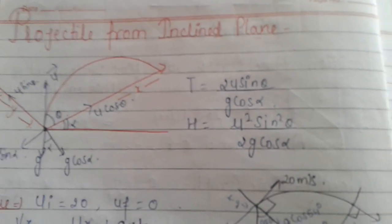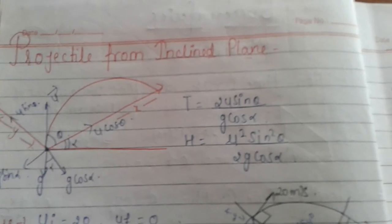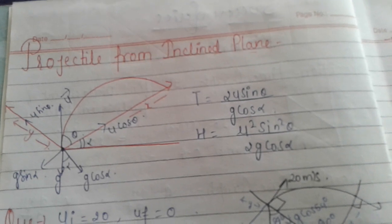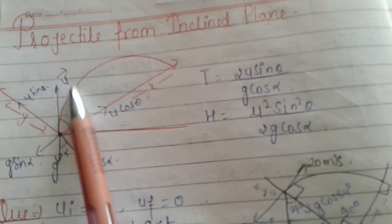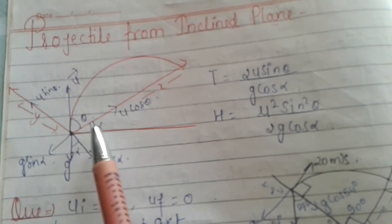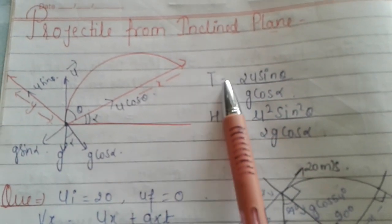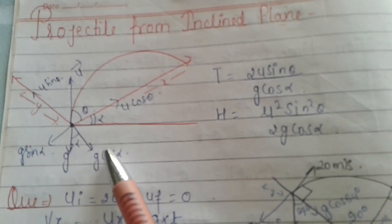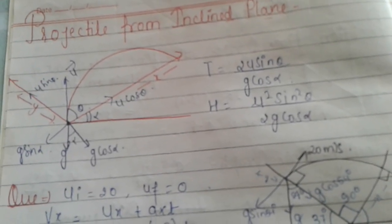The next topic is projectile motion from an inclined plane. If there is an inclined surface, we resolve the velocity into components: u cosθ along the incline and u sinθ perpendicular to it. We define two angles: alpha (angle of incline with ground) and theta (angle of projection). Gravity components become g cosα perpendicular and g sinα along the incline. The time period formula becomes T = 2u sinθ / g cosα, and the maximum height is H = u² sin²θ / 2g cosα.